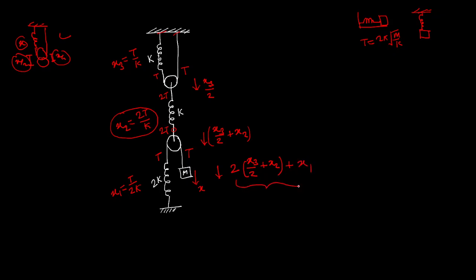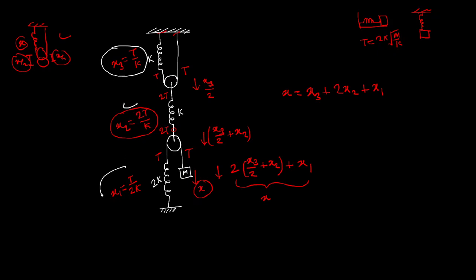Since we pulled it down by x, we have: x = x3 + 2x2 + x1. Now putting all the values — x3 = T/k, x2 = 2T/k, x1 = T/2k — we get: x = T/k + 4T/k + T/2k, which gives x = 11T/2k.